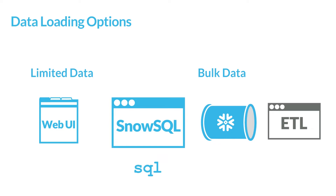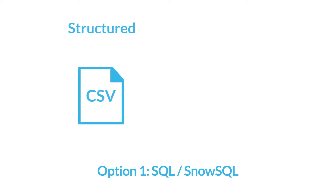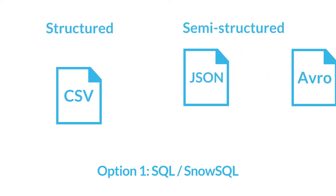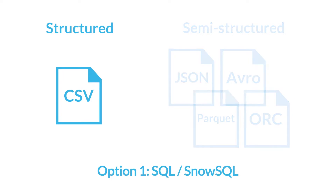Using SQL, you can bulk load data from any delimited plain text files such as comma-delimited CSV files. You can also bulk load semi-structured data from JSON, Avro, Parquet, or ORC files. However, this video focuses on loading from CSV files.